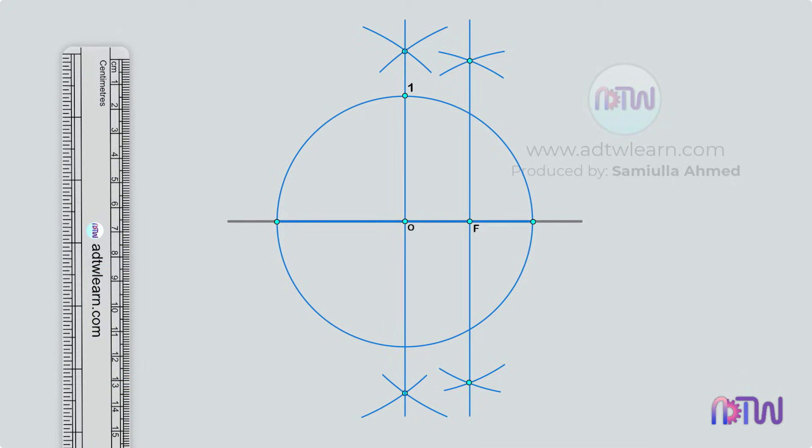After this, keep the compass at this point F and take the length between point F and 1. And using point F as a center, draw an arc from point 1 up to the horizontal line. Name this point as G.